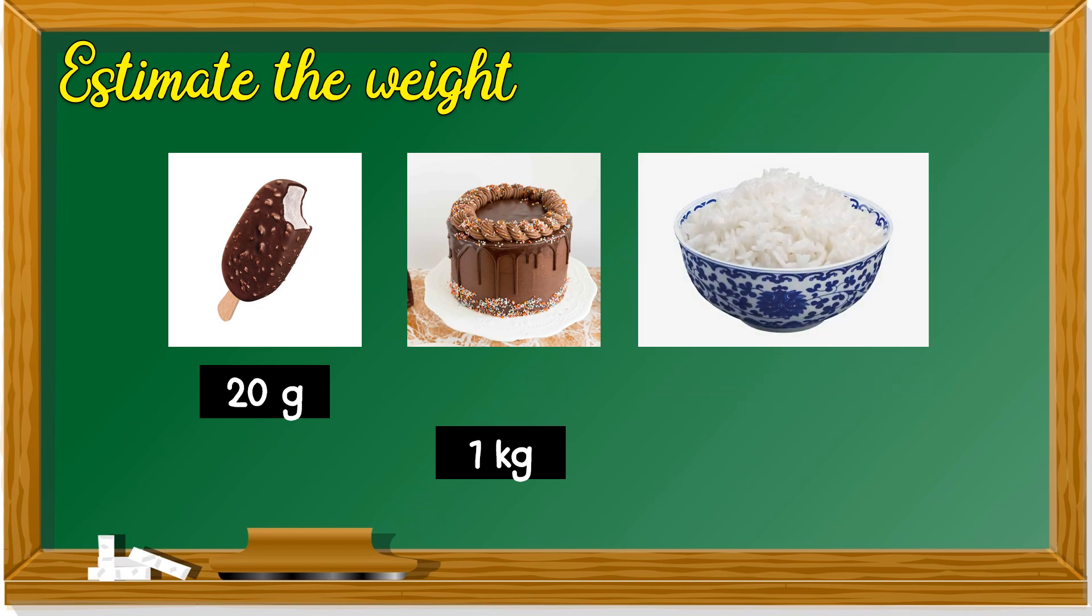Next one, a bowl of rice. Could it be 25 gram or 250 gram? A bowl of rice. The more accurate weight would be 250 gram. So, did you get it correct? If all three are correct, you're very good.